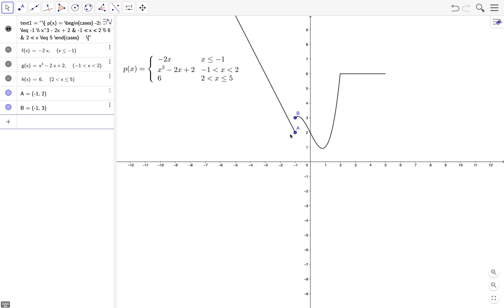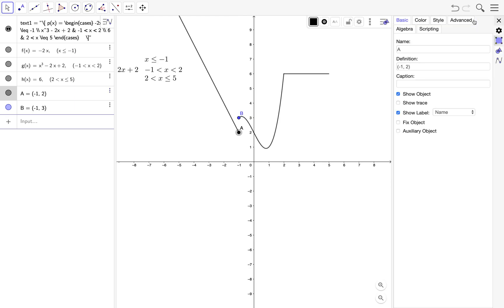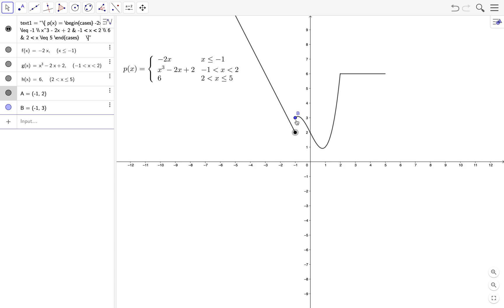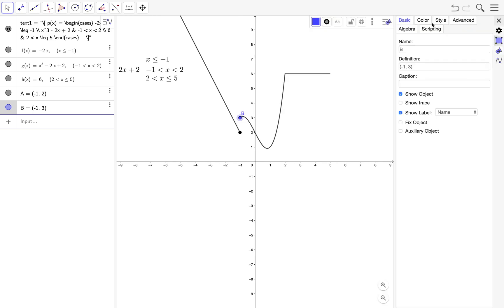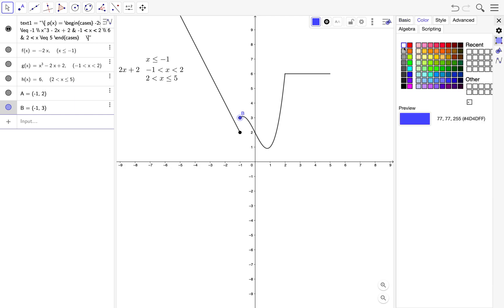So since for negative 2x, x equals negative 1 is included, we can just change the color of this point to black and then remove the label. However, for this point it's not included. Therefore, we change the color to white. We can go to the gear and then choose white.